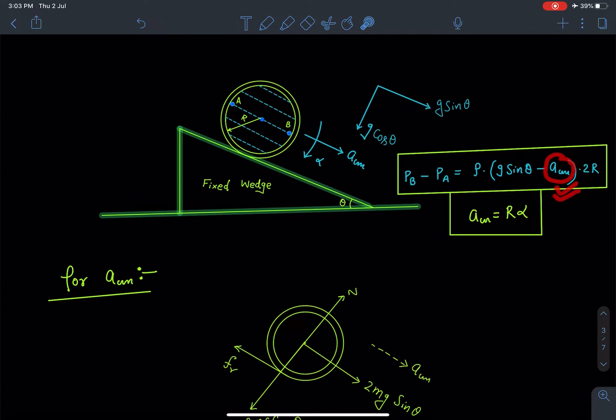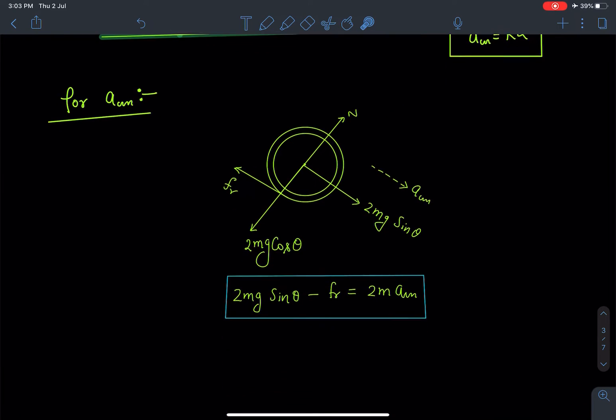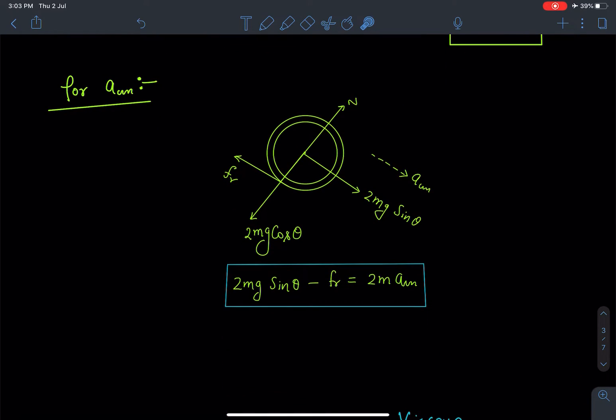So let's calculate this a_CM. So if we draw the FBD for the system, normal reaction will be acting perpendicular to the incline, friction on the shell will be acting which is providing the rotation to it which is along the inclined plane. We are resolving this total weight which is mass of the shell plus mass of the liquid which is 2mg sinθ along the incline and 2mg cosθ which is perpendicular to an incline. So basically we are resolving this 2mg force into two directions.